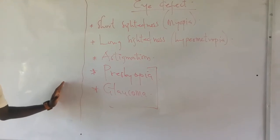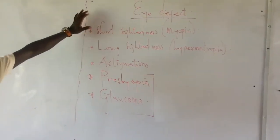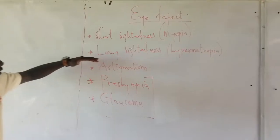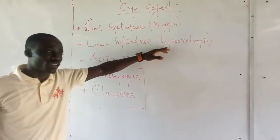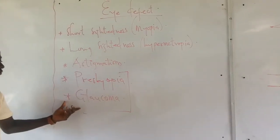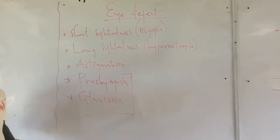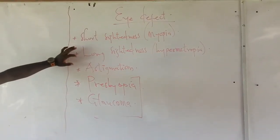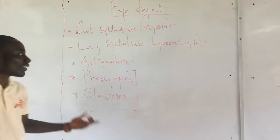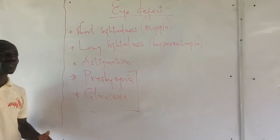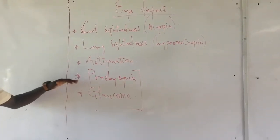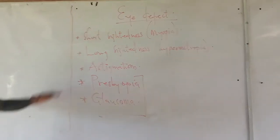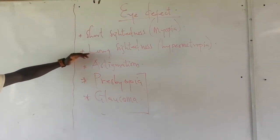Among the examples of eye defects, we can mention short-sightedness, also known as myopia; long-sightedness, also known as hypermetropia; astigmatism; presbyopia; glaucoma; cataract and others. But in integrated science, you are expected to know basically short-sightedness and long-sightedness — myopia and hypermetropia — as well as sometimes astigmatism. If you are doing elective science, you may be asked about presbyopia, cataract, and glaucoma. So today we are going to base our lesson on short-sightedness, long-sightedness, and astigmatism.